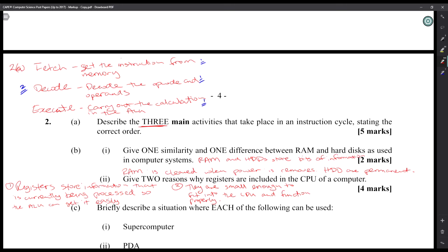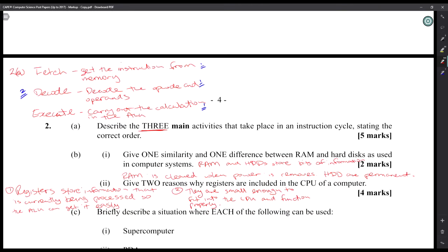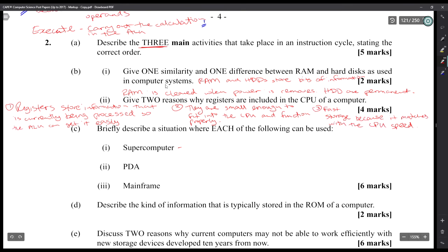Next, briefly describe a situation where each of the following can be used, and we start with a supercomputer. If you want to give a third answer for the register question, you can say that the storage is very fast - the storage is fast and it moves at the same speed as the CPU. But that's technically describing cache, so it could be that that's what they want.